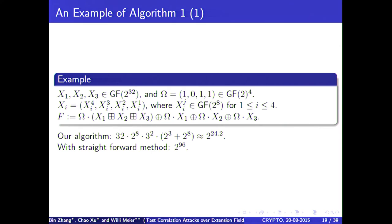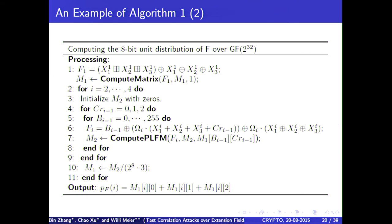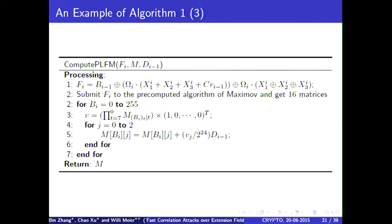Again, an example, which I mentioned already. If you would have here three summands for inter-addition, and if the mask would look like 1 0 1 1 in GF(2^4). Then we would have here this expression here for the noise variable here. And indeed, we are able to compute the distribution of this noise variable in 2^24 operations. I won't go into this example here, how to compute this noise distribution.